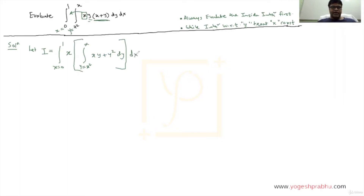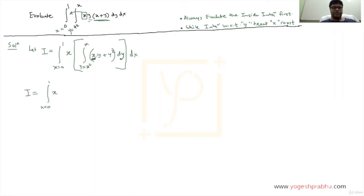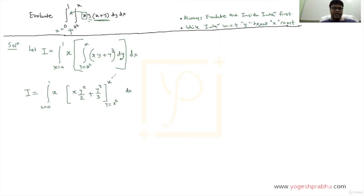Now let us start integrating the inner integral first. This is an integration with respect to y, and as per the rule, we treat x as a constant. So x here is just a constant. The integration of y gives y squared by 2, and the integration of y squared gives y cubed by 3. The limits of y go from x squared to x. After evaluating the integration, substitute the upper limit first, then the lower limit.